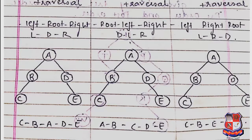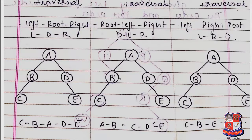For pre-order traversal, we follow root, left, right. We consider the root node first, so A is at the first position. Then we move to the left child B. B is also a root node of its subtree; its left child is C, so we visit B next.